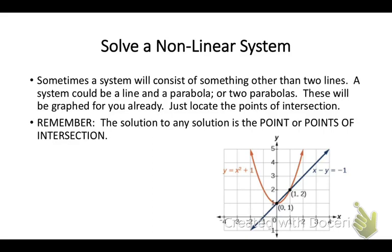Sometimes you'll have a nonlinear system. So it will consist of something other than two lines, maybe a line and a parabola or maybe just two parabolas. They'll be graphed for you already. All you need to do is locate the points of intersection. On our example here, circle those points. Notice that they are at zero, one, and one, two. And so you would enter the solutions as both of those points. You're not looking at where the graphs are crossing the x or the y axis. You're looking at the graphs and where they cross each other.